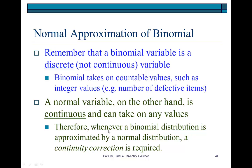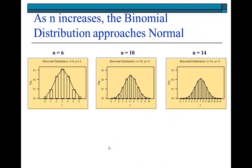Therefore, whenever a binomial distribution is approximated by the normal distribution, we're going to do what's called a continuity correction, as I will show you shortly. It's a simple concept.